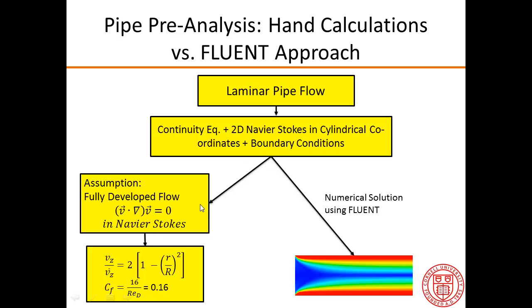In the hand calculation approach, we have to make an additional assumption that we have fully developed flow. In that case, we can knock off that term in the Navier-Stokes equations, and then we can do hand calculations and predict the velocity and the skin friction coefficient. Both the hand calculation and Fluent start off using the same mathematical model, except that we have additional assumptions in the hand calculation.